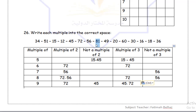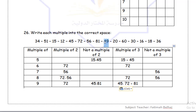Moving on to 81. Is 81 a multiple of 5, 6, 7, or 8? No. A multiple of 9? Yes. But it's not a multiple of 2, so I'll copy it there. Is it a multiple of 3? Yes, so I'll copy it there. Moving on to 49 — as we all know, 49 is a multiple of 7 and only 7. It's not a multiple of 2, so I'll copy it here. And 49 is not a multiple of 3 either.